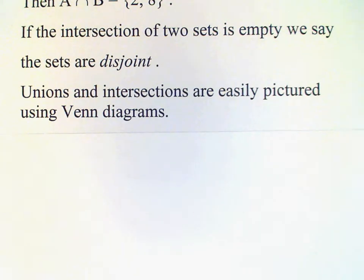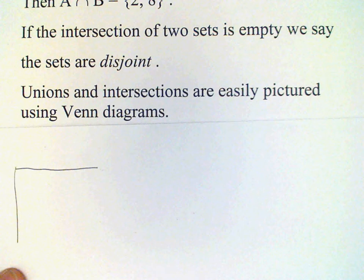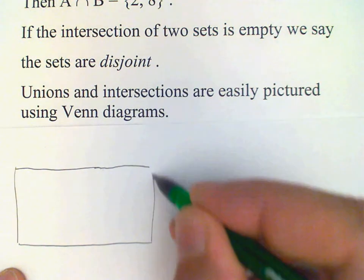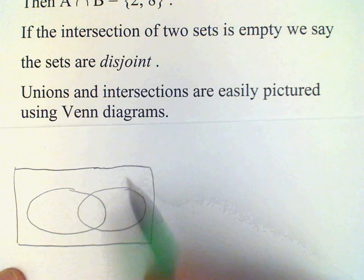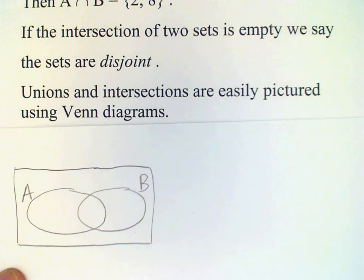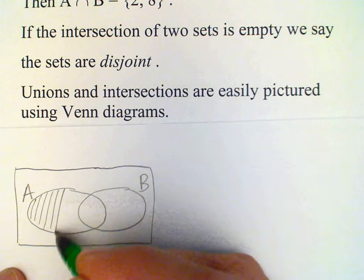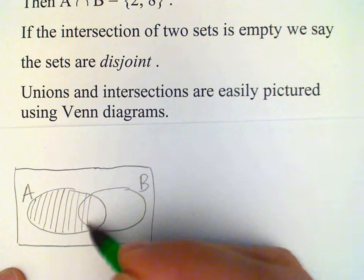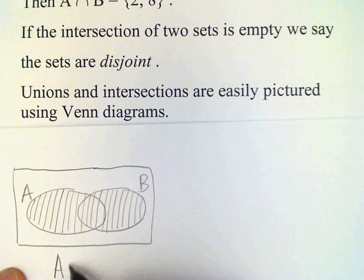So for example, if we want to display the union of two sets, we can draw our rectangle and our ovals inside to represent the two sets. So I have A and B here. And then to represent the union, I'm going to shade the diagram. And that will represent my union.